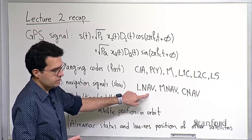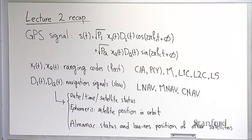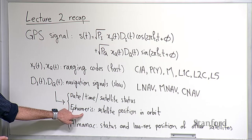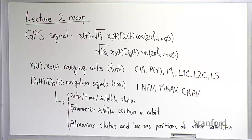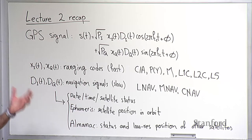We also talked about the navigation signals. There is the legacy LNAV, and then the military and civilian modern navigation signals, MNAV and CNAV. What's important about these navigation signals is that they contain human-understandable information — data packets with messages like day, time, and satellite status. Two very important parts of each navigation signal packet are the ephemeris, which tells the receiver about the satellite position in orbit, and the almanac, which gives the status and some low-resolution orbital information about the rest of the satellites in the constellation.